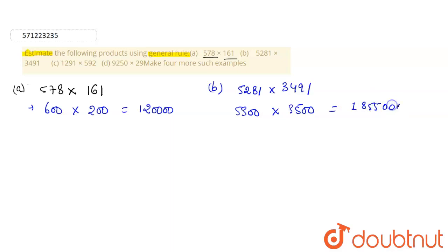For the third part, in the next part, we have 1291 and it's multiplied with 592. 1291 is approximately equal to 1300, and 592 is approximately equal to 600. So its multiplication would give us 780,000. This is the estimated product.